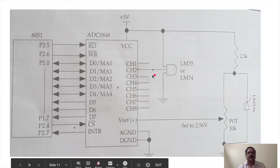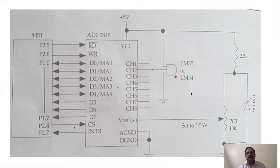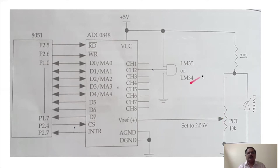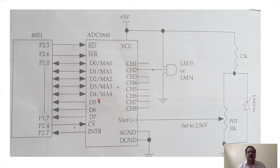The ADC 0808 and ADC 0809 belong to the same family, so don't be confused between them. Through the potentiometer we can vary the input voltage, and from the channels the analog input of 0 to 10V is converted into equivalent digital output. That is how A-to-D converters are interfaced with the 8051 microcontroller.